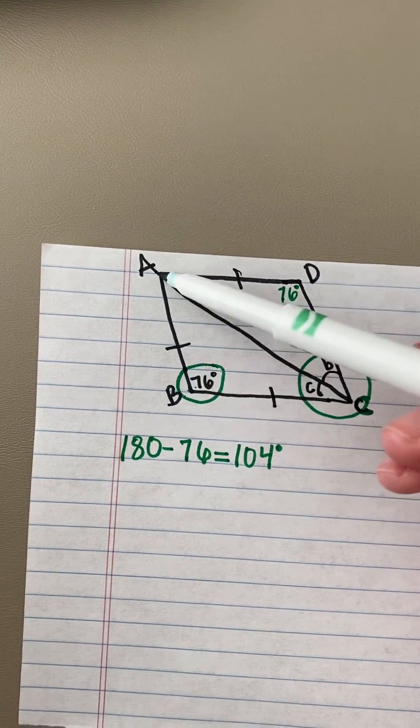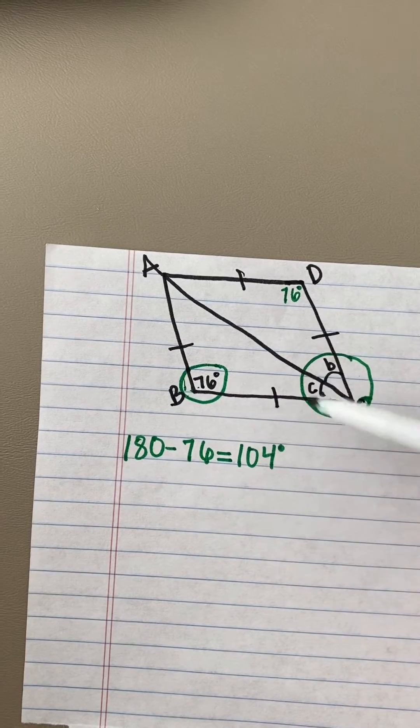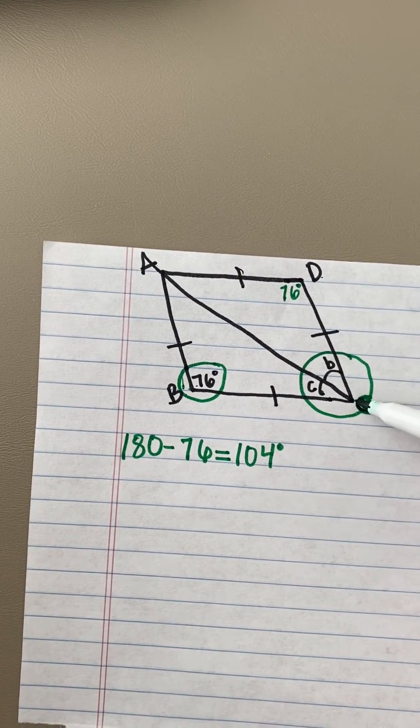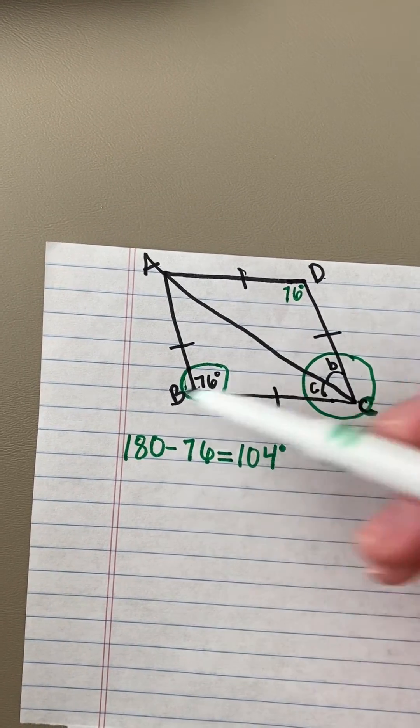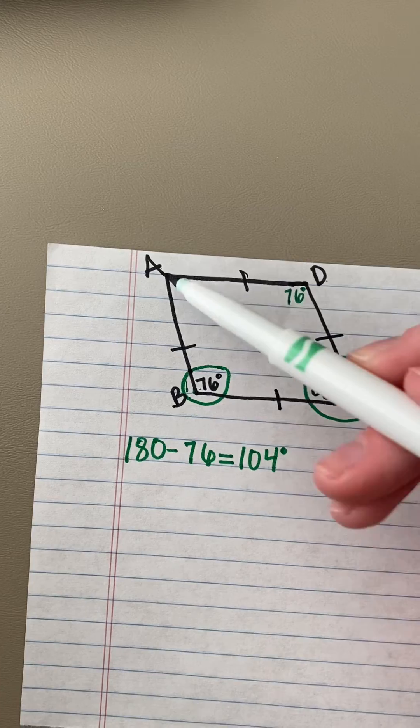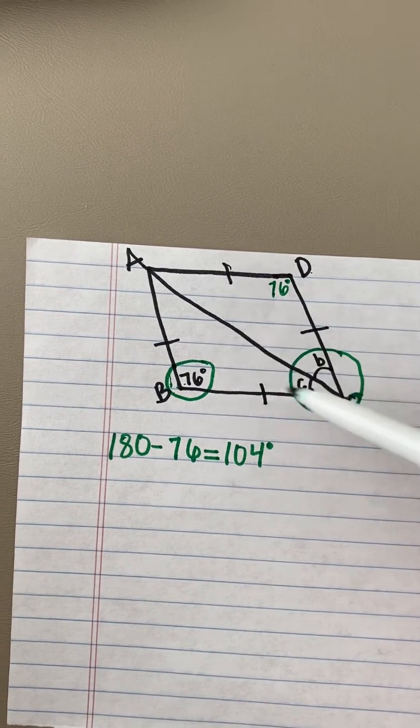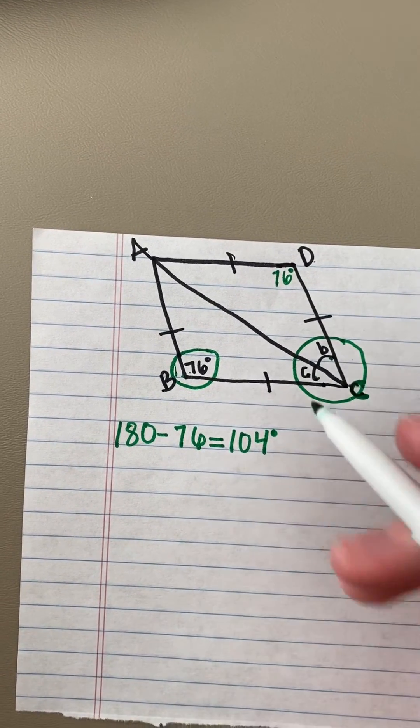So side AB is equivalent to side CB, and AD is equivalent to side DC. And we know an isosceles triangle has two congruent sides. So this line right here is cutting this rhombus exactly in half. So that's how we know that this angle and this angle are equivalent.